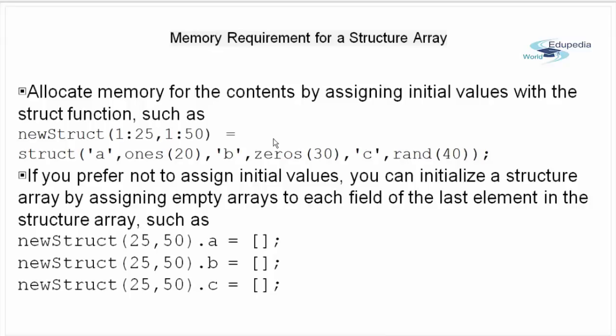Memory requirements for a structure array. Structure arrays do not require completely contiguous memory. This means that memory allocation for structure array as a whole need not be continuous. However, each field of the structure requires contiguous memory as does the header that is created by MATLAB to describe the array. In simple language, each field described in structure requires continuous memory allocation. We can allocate memory for contents by assigning initial values with the struct function as demonstrated in the first line of code. So we call a structure function, then we allocate memories A equals ones, then B equals zeros and C equals random values.